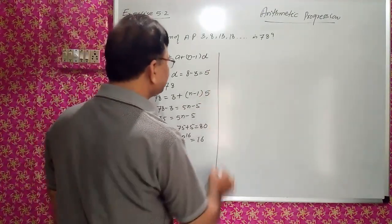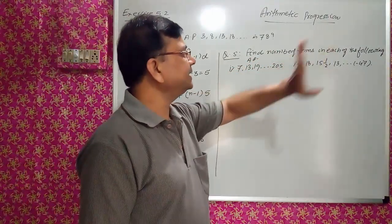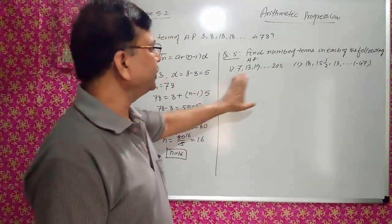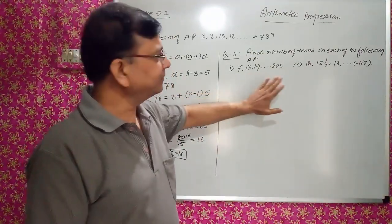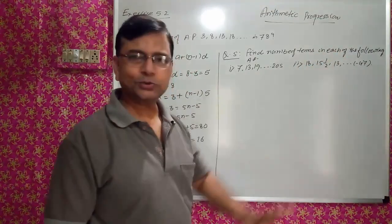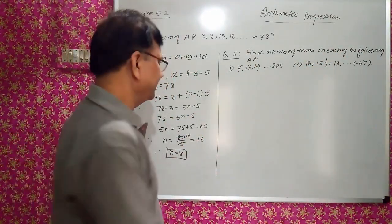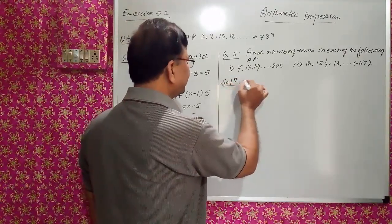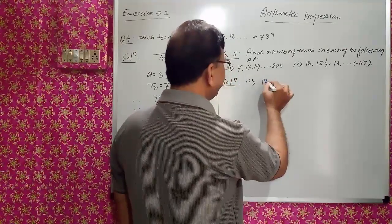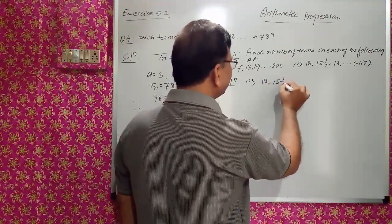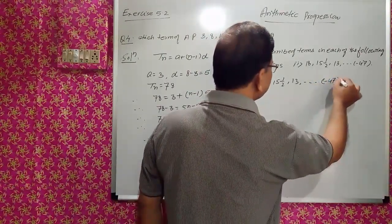We will go for the next problem. Question number 5: find the number of terms in each of the following APs. Two APs are given. I will take the second part first and leave the first part as homework. The second AP is: 18, 15½, 13, ... and the nth term is -47.